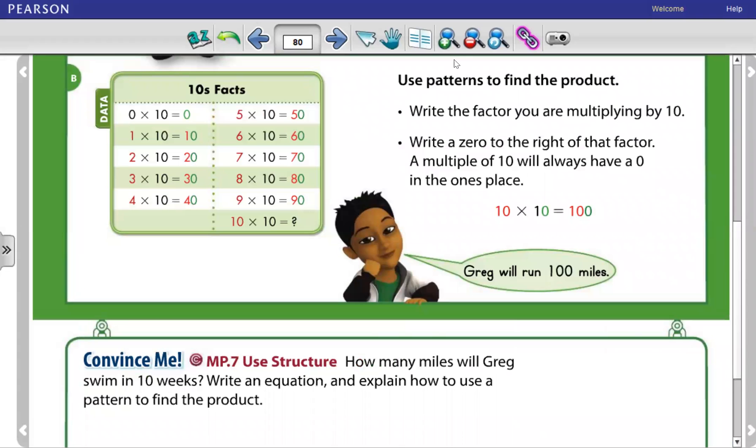So use patterns to find the product. Write the factor you are multiplying by 10. Write a 0 to the right of that factor. A multiple of 10 will always have a 0 in the ones place. So 10 times 10 equals 100. So Greg will run 100 miles.